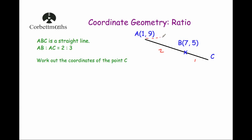Horizontally we go from 1 to 7, so that's 6 across. Vertically we go from height 9 down to height 5, so that's 4 down. To get from B to C we do half of that — so rather than 6 across we go 3 across, and rather than 4 down we go 2 down. So point C is 3 across from B giving x = 10, and 2 down from 5 giving y = 3. The coordinates of C are (10, 3). In these ratio questions there's often more than one way to tackle them.